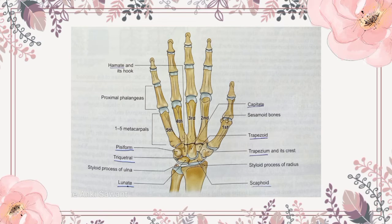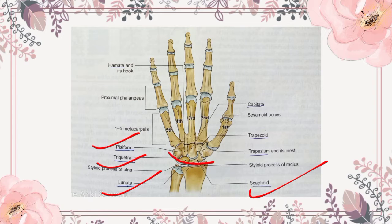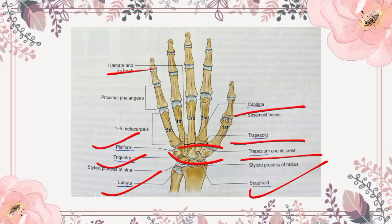This is the diagram. As you can see, this is the right hand supinated — supinated means palms facing upwards towards your ceiling. So this is right hand supinated. First is scaphoid bone, then lunate, triquetral, pisiform — this is the proximal carpal row. Then the second distal row which is trapezium, trapezoid, capitate and then hamate.